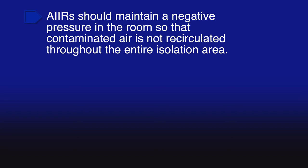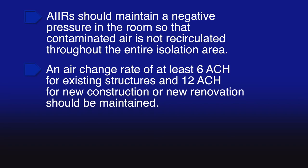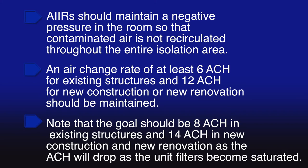Airborne infection isolation rooms should maintain negative pressure so that contaminated air is not recirculated throughout the isolation area or allowed into other zones such as the cold zone. According to the CDC, air change rates of at least six air changes per hour (ACH) are required for existing structures being modified into AIIRs, and 12 ACH are required for new construction or renovation. These rates must be maintained, so your target should be higher — perhaps 8 ACH for existing structures or 14 ACH for new construction — because ACH will drop as filters become saturated.